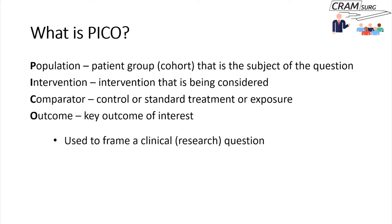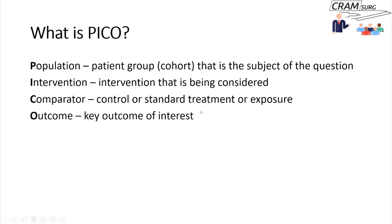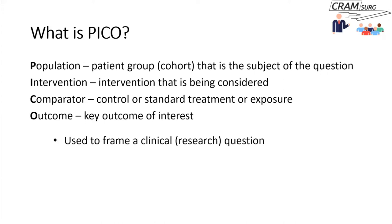To recap, the PICO framework: P stands for population, which is the patient group that is the subject of the question; I is intervention that is being considered; C is comparator or control; and O is the outcome of interest, or at least one of the main outcomes of interest. This framework is used to frame a clinical question or a research question.